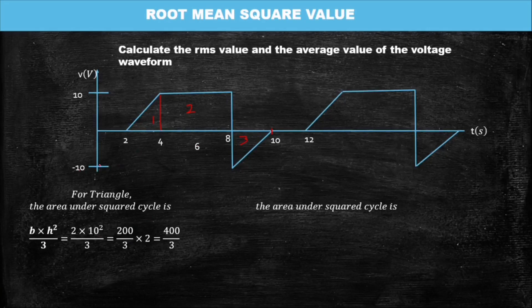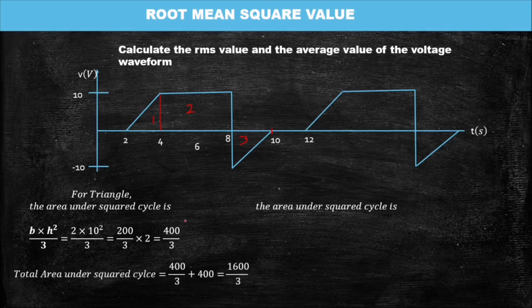With the triangle formula we get 200 over three. But as you can see, there are two triangles — the second one is negative. When you square negative ten it becomes positive, so you multiply by two, which gives 400 over three. In the brackets, negative ten squared gives 100, times two gives 200, and that's why we get 400 over three — because we have two triangles.